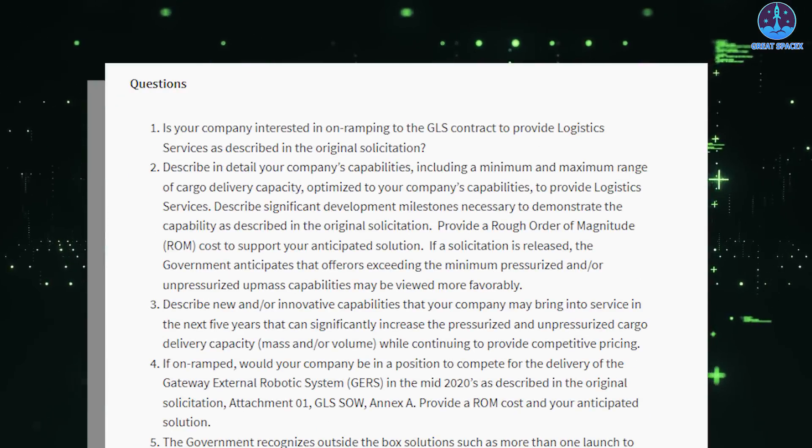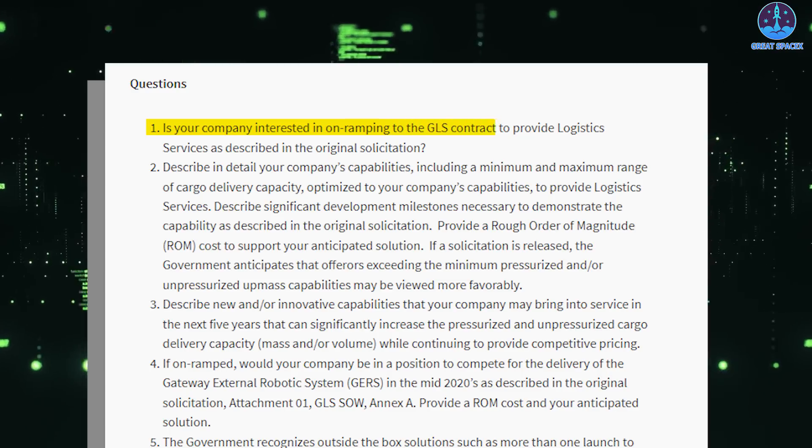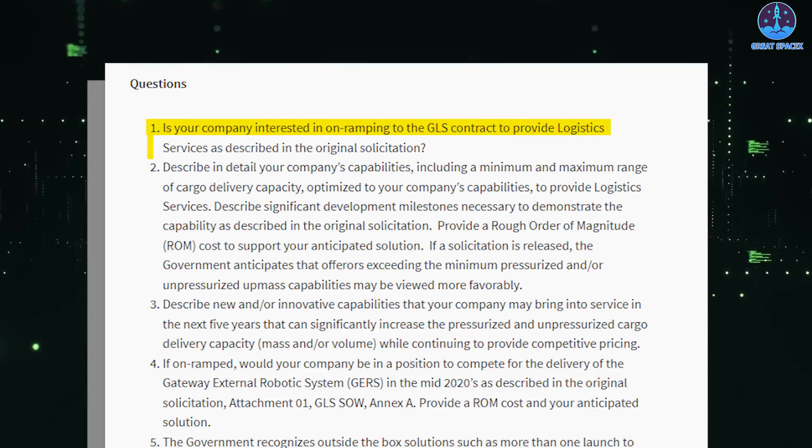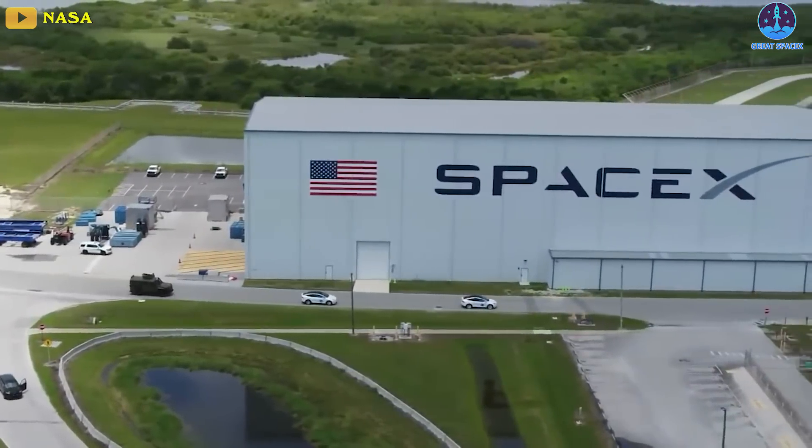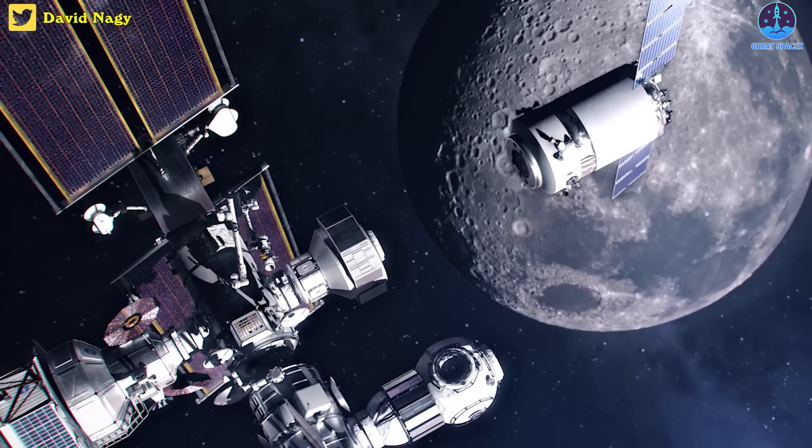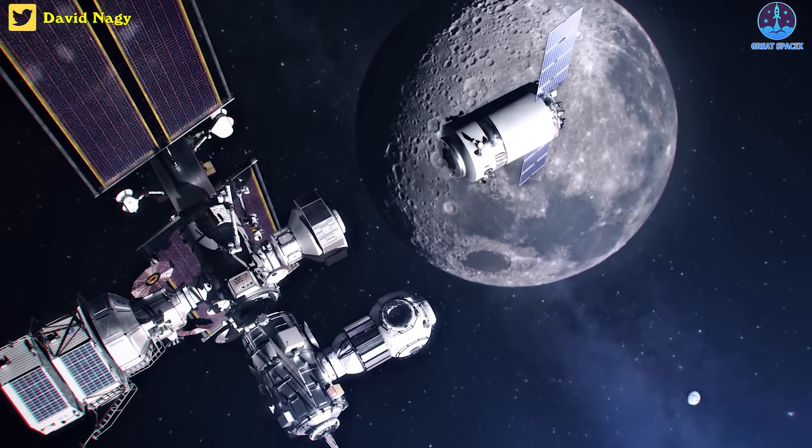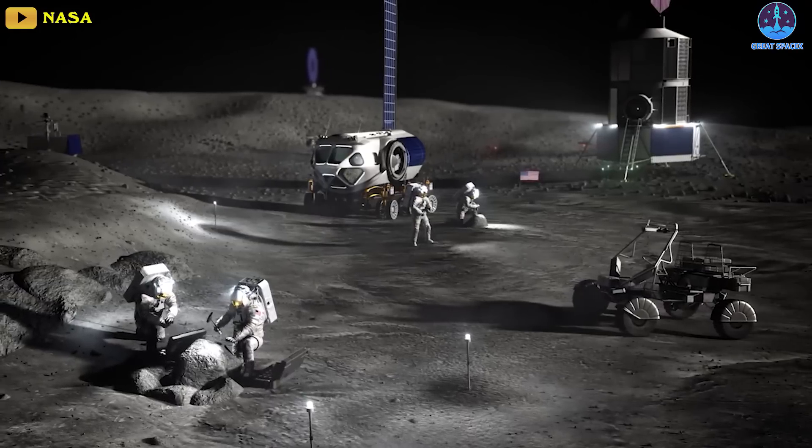The first question is perhaps the most telling. Is your company interested in on-ramping to the GLS contract to provide logistics services as described in the original solicitation? As far as we know, SpaceX is the only company with an existing GLS contract, which leads me to believe that this is more of a roundabout way to say start work on.